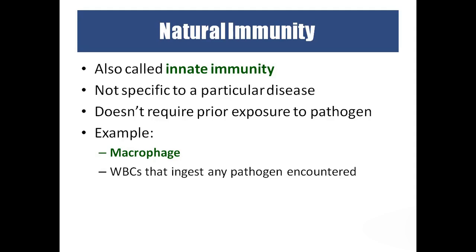Innate immunity is not disease-specific — it will fight all bacteria and viruses without prior exposure to pathogens. Examples of innate immunity include all WBC cells: neutrophils, eosinophils, basophils, lymphocytes, monocytes, and macrophages. These all come under innate immunity because this immunity is present from birth.